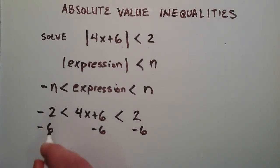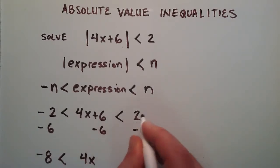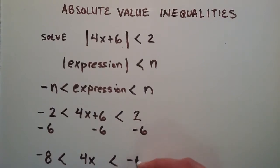So we have negative 2 minus 6, which gives us negative 8, and that's less than 4x plus 6 minus 6. The plus 6 and minus 6 give us 0, so we're left with 4x in the middle. That's less than 2 minus 6, which gives us negative 4.